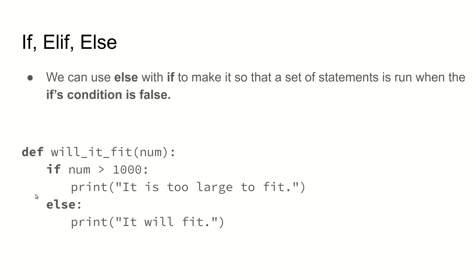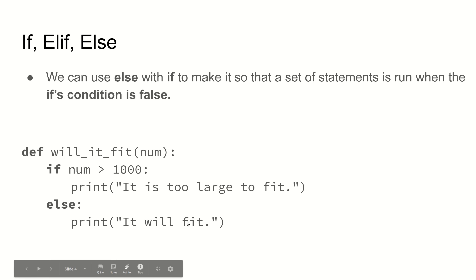The else part will only happen when num is not greater than 1,000. For instance, if num was 5, the if statement would see 5 is not greater than 1,000, so it would skip the first print. The else would be the part that gets done, and it will print 'it will fit.' Hopefully this example makes logical sense — something cannot be too large to fit and also fit.